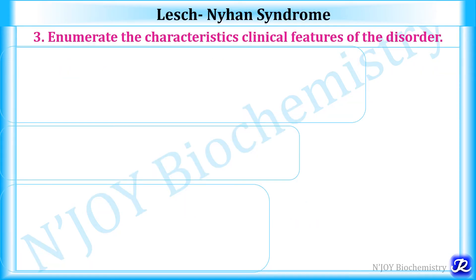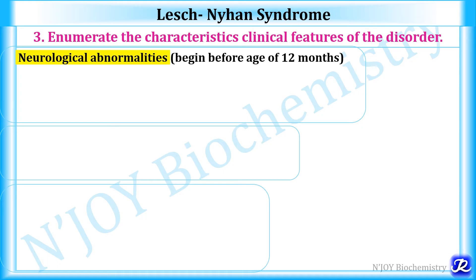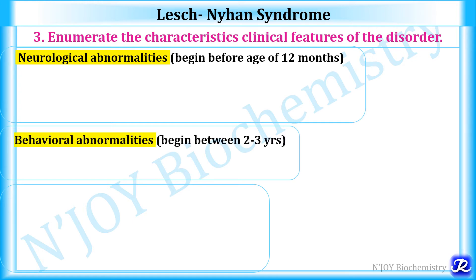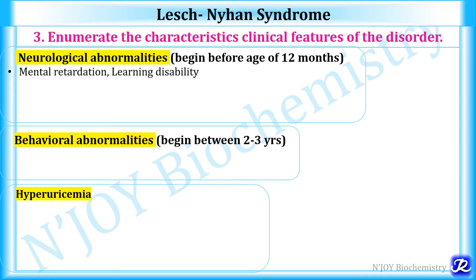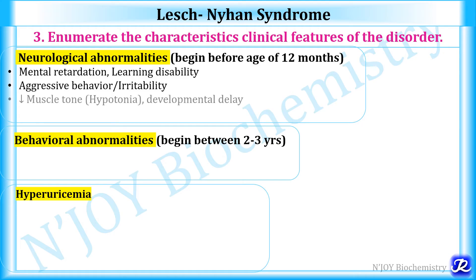The characteristic clinical features form a triad. Neurological abnormalities begin before the age of 12 months, behavioral abnormalities begin between 2 to 3 years, and there is hyperuricemia. Neurological abnormalities include mental retardation, learning disability, aggressive behavior and irritability, hypotonia (decreased muscle tone), dystonia, developmental delay with all milestones delayed, and poorly articulated speech.